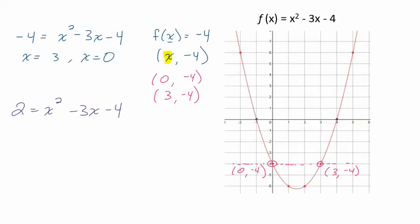But with the graph, we can draw a line. We want our output to be 2. So come up here to 2. Draw a line through 2.